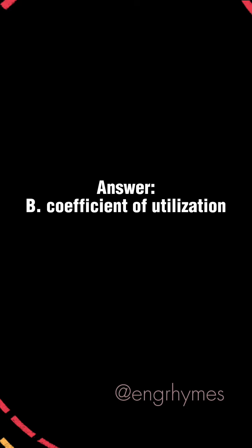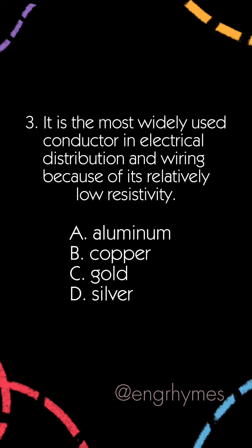Answer: B, Coefficient of utilization. It is the most widely used conductor in electrical distribution and wiring because of its relatively low resistivity. A) Aluminum, B) Copper, C) Gold, D) Silver.